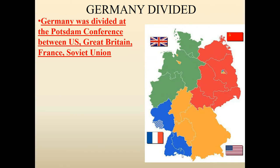After World War Two, when Germany surrendered, Germany was immediately divided at a very famous conference called the Potsdam Conference. A lot of people say this conference is actually where the Cold War really started. At the Potsdam Conference, the four powers — the U.S., Great Britain, France, and the Soviet Union — basically divided Germany up into four zones.